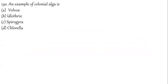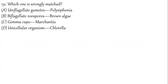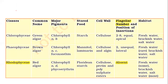Question 130: An example of a colonial algae — direct NCERT line. Question 131: Which one of the following is wrongly matched? Polysiphonia is described as uniflagellated — that is a wrong statement. Polysiphonia belongs to red algae where flagella are absent. The answer for question 131 is option A.